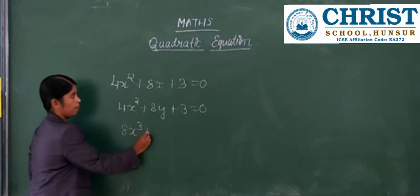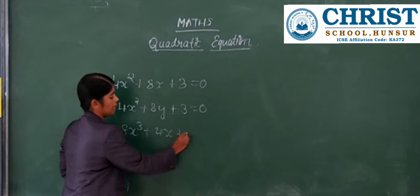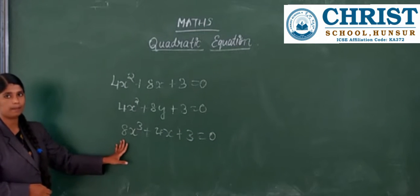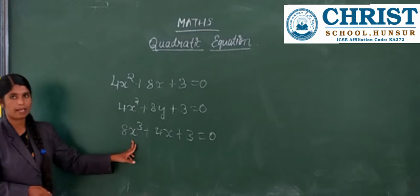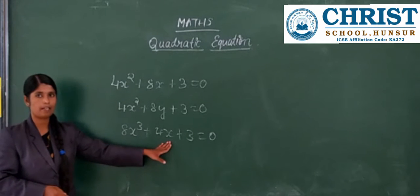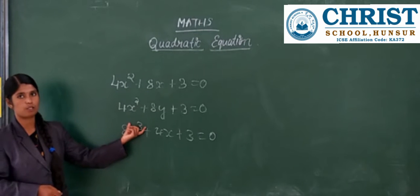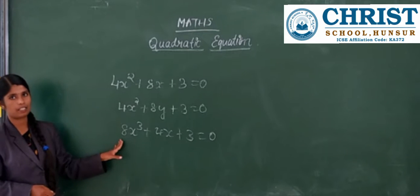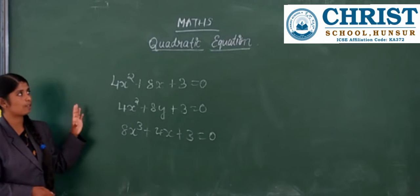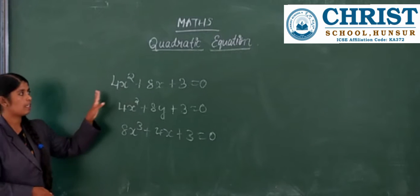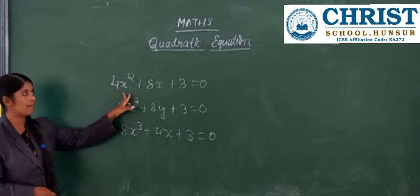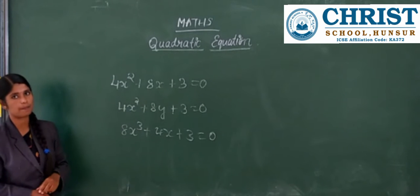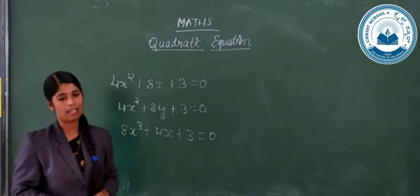The equation should have the same single variable, and the highest power of that variable should be 2. For example, if I write 8x³ plus 4x plus 3 equals to 0 — here it is the same variable x, but the highest power is 3, not 2. So we cannot say this is a quadratic equation. To qualify as a quadratic equation, the equation must have the same single variable and the highest power must be 2.